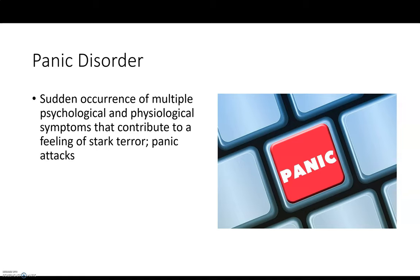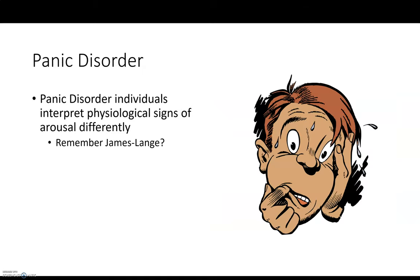Panic disorder involves symptoms that occur suddenly, contributing to feelings of stark terror and panic attacks. Sometimes this is due to autonomic arousal — the fight-or-flight response activating in the body with an unknown cause, and the mind then interpreting that as panic or terror. This provides some support for the James-Lange theory. It suggests that individuals with panic disorder may interpret physiological signs of arousal differently, and there are sometimes abnormalities in that system.